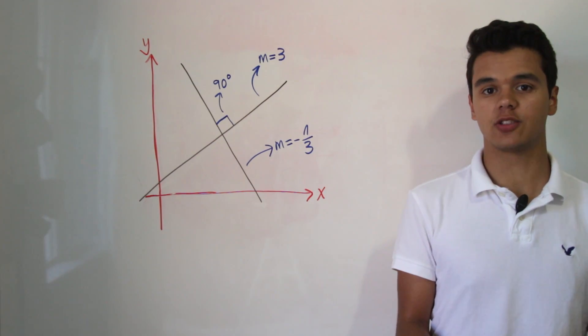Two lines are said to be perpendicular to each other as long as they meet in a 90 degree angle. Let's see how two perpendicular lines are linked to each other.